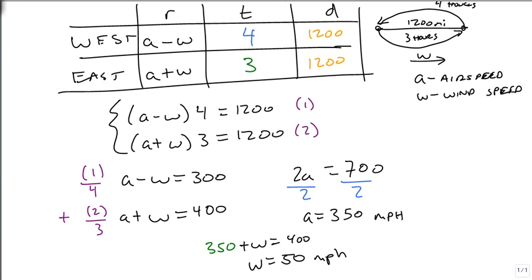Notice this still works the other way. 350 minus 50 is 300. 300 times 4 is 1,200 miles. 350 plus 50 is 400. 400 times 3 is 1,200 miles. So the airspeed of 350 and the wind speed of 50 miles per hour adequately solve the problem.